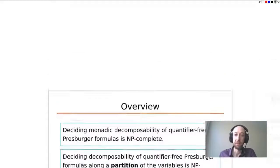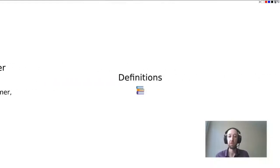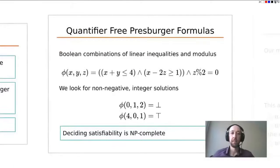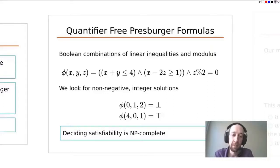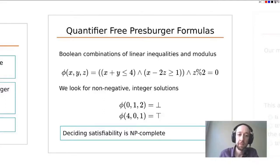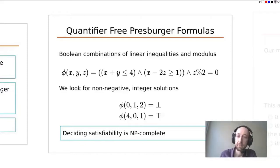What you probably want to see now is what these definitions mean. Quantifier-free Presburger arithmetic has a logical formula with free variables — in this case x, y, z — which take non-negative integer values: 0, 1, 2, 3, and so on. The formula is a Boolean combination of linear inequalities, such as x plus y is less than 4, combined with other linear inequality terms. We also have modulus terms, for example z is divisible by 2.